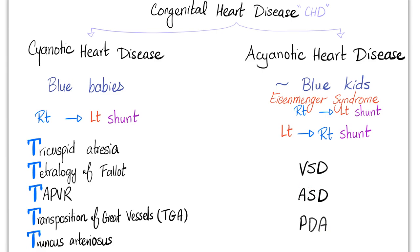The acyanotic group includes VSD, ASD, and PDA — ventricular septal defect, atrial septal defect, and patent ductus arteriosus. These involve left-to-right shunt, which is why they are acyanotic. But with time, complications cause increased pressure leading to reversal of the shunt from left-to-right into right-to-left, causing cyanosis. This reversal is known as Eisenmenger syndrome. So they can become blue kids, but only when they grow up because it takes time.